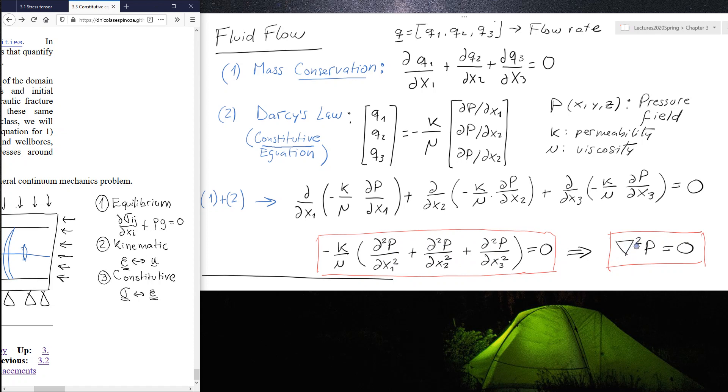And all of this can be simplified into this triangle, which is called the Laplacian operator. And this triangle is actually the Greek letter Nabla. And squared, this is the Laplacian operator, and the Laplacian operator applied on pressure has to be equal to zero, which is equal to what I have over here, just in a more compact version.